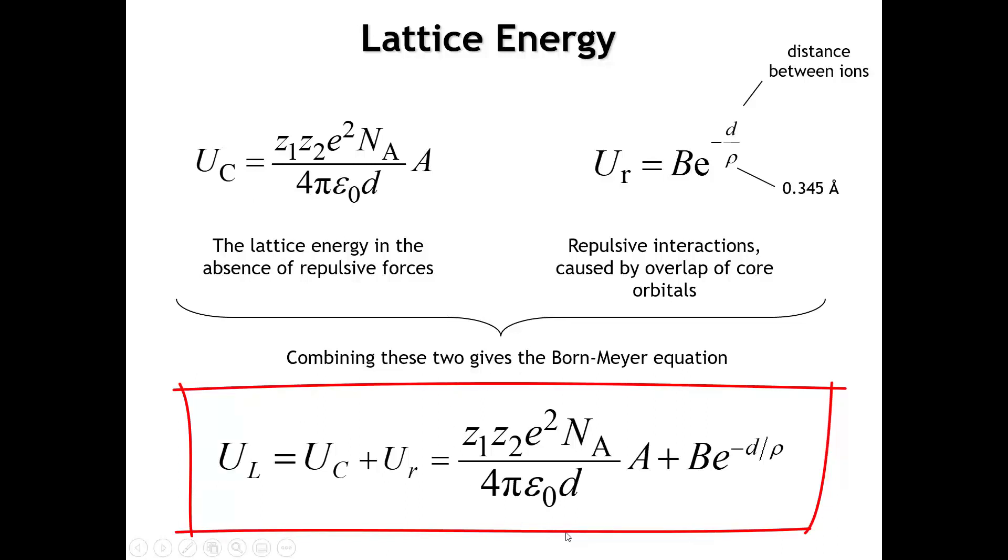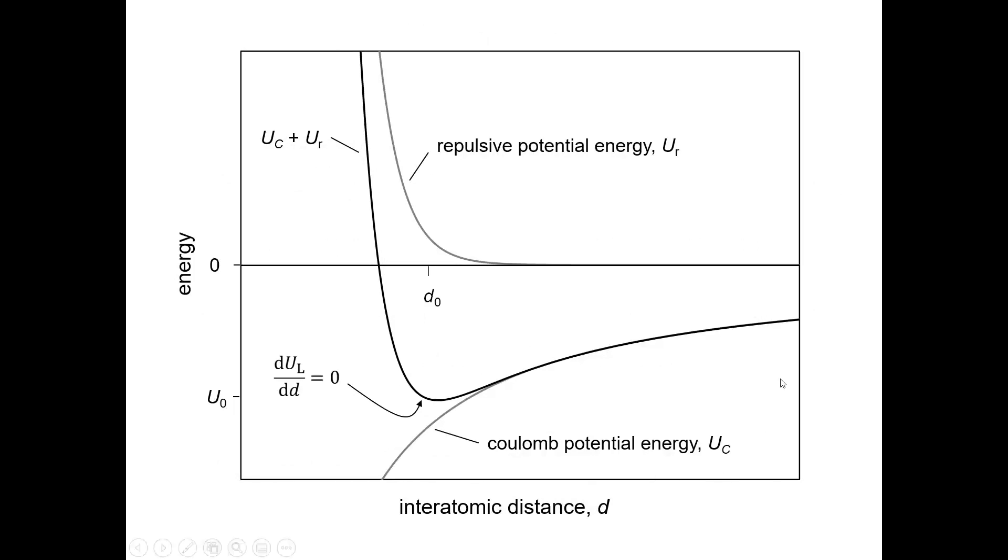Now we can combine these two and get this expression. The problem with this expression is we don't know the value of our empirical constant B. Everything else we know. A is the Madelung constant. We're setting rho to be 0.345. We've got these distances. What we could do is plot the Coulomb energy as a function of distance. The closer together the ions get, that becomes more and more negative. And up here we plot the repulsive energy - the repulsion between these core electrons. At long distances, that's negligible because it's an exponential function. But once we start to bring them too close together, that function rises sharply. If we add the two of them together, we find that we reach a minimum.